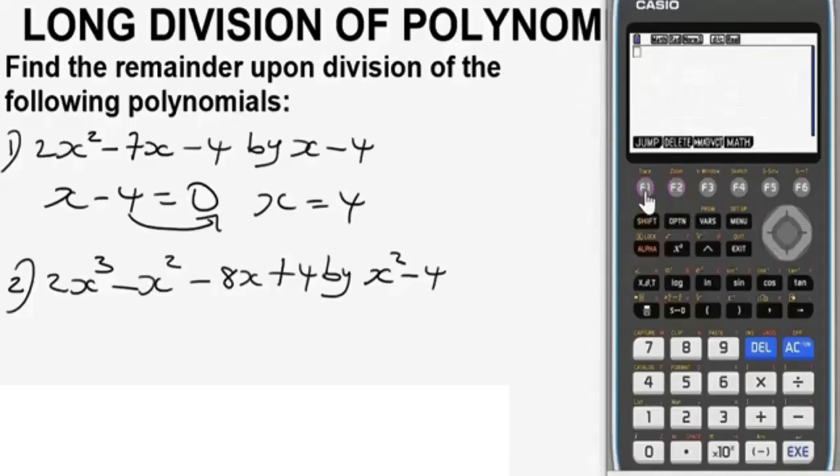Let's delete everything. Now to find the remainder, all you have to do will be to input this polynomial exactly as we have it here. So it's going to be 2x² alpha x square, minus 7x alpha x, we have minus 4, and that's all. Let's press equals. We get our result or value zero, that means the remainder of this polynomial is zero.